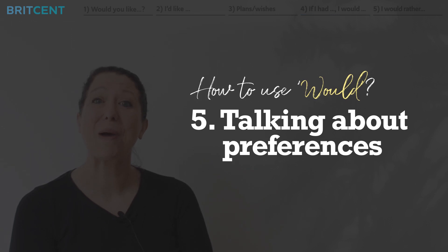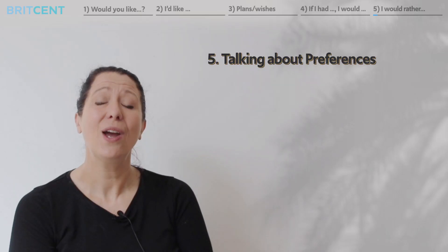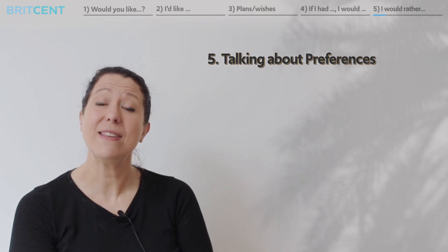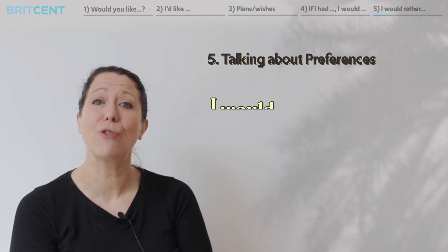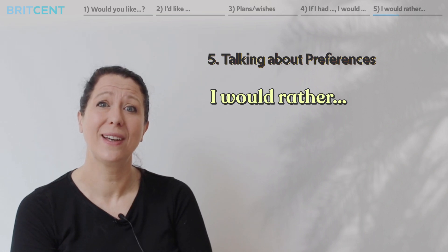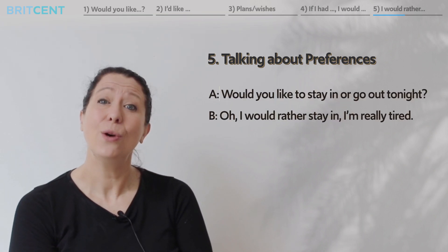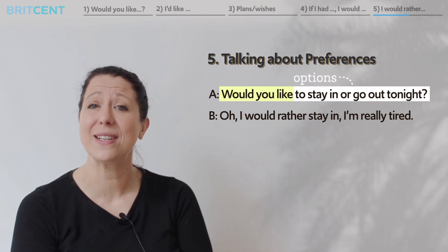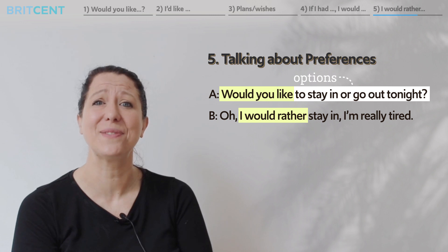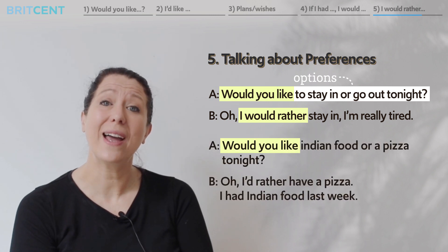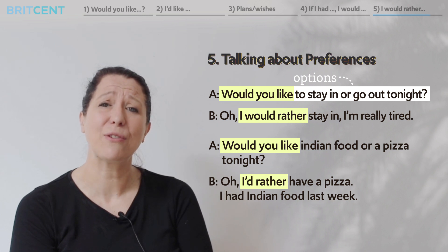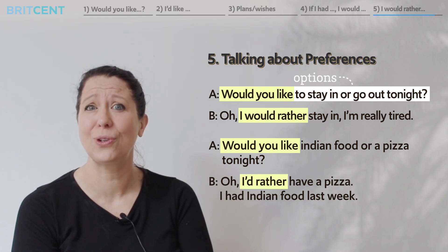Number five: let's talk about preferences. We can use 'would' to talk about preferences. In this case, we need to say 'I would rather'. We can use this when we have a choice. For example: Would you like to stay in or go out tonight? I'd rather stay in — I'm really tired. Would you like Indian food or a pizza tonight? I'd rather have a pizza. I had Indian food last week.